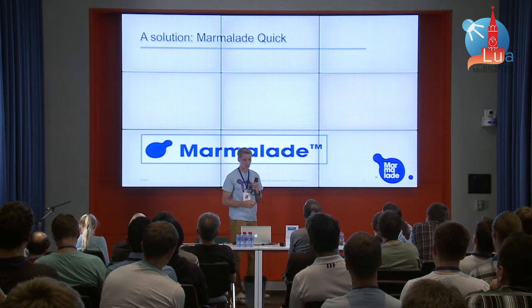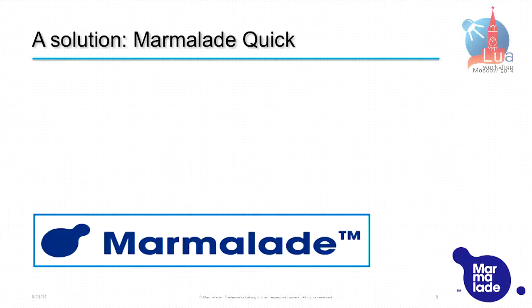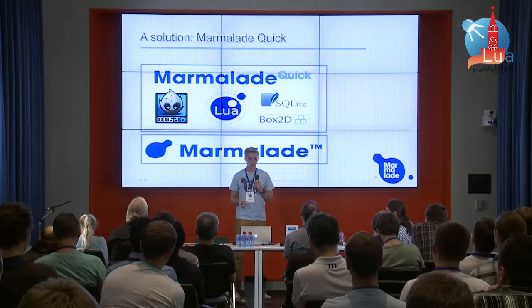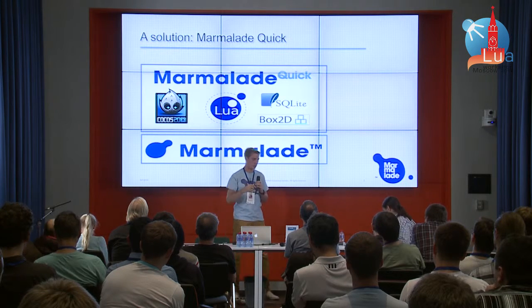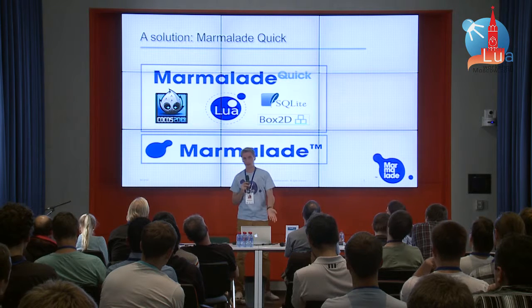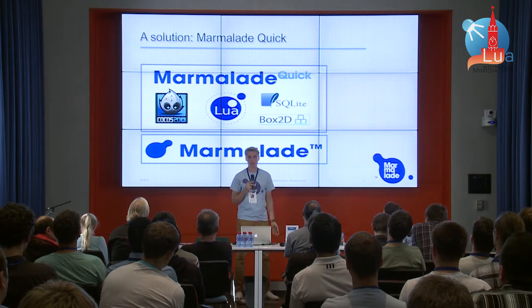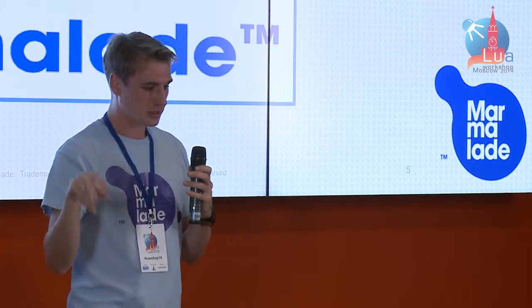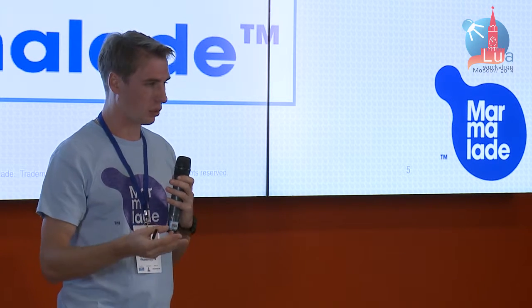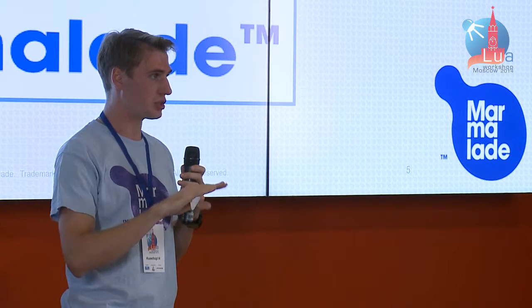Here came the solution: Marmalade Quick. It utilizes the Marmalade platform, and on top of that we took a set of commonly used tools: Cocos2D, Box2D for physics, SQLite, and Lua libraries. If you use Cocos2D you're free to use any compatible tools like level editors and texture atlas creators. We combined all that into a single product. The base is C++ but developers don't see it at all — on top of that there is pure Lua.